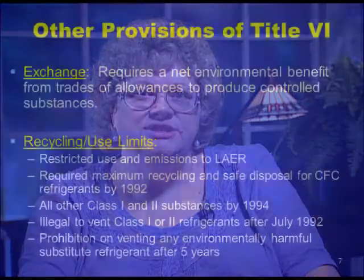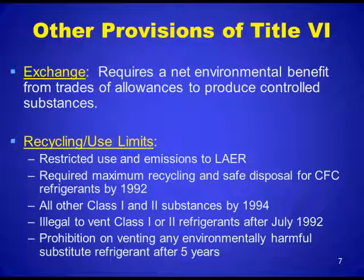There are some other provisions of Title VI. Regarding exchanges, it requires a net environmental benefit for trades of allowances to produce controlled substances. It restricted the use and emissions to the lowest achievable emission rate. It requires maximum recycling and safe disposal for CFC refrigerants by 1992, and all other Class I and Class II substances by 1994. It became illegal to vent Class I or II refrigerants after July 1992, and a prohibition went into place on venting any environmentally harmful substitute refrigerant after five years.